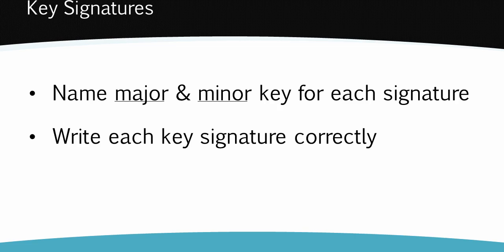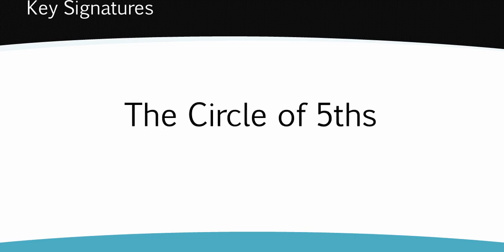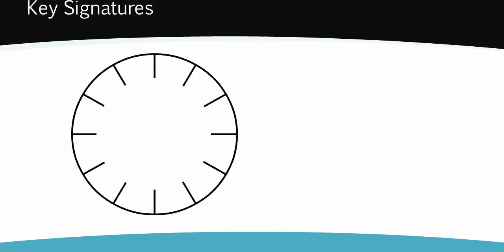We'll start by learning the key signatures for the major keys, and to do this we can use a tool called the circle of fifths. Start by drawing a circle and divide it up like a clock into twelve. At twelve o'clock, write C for C major.